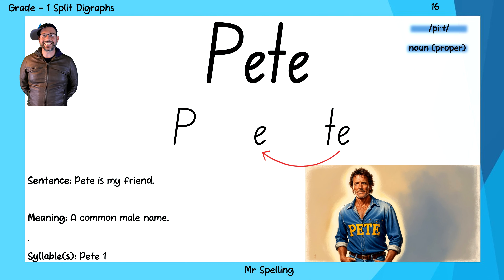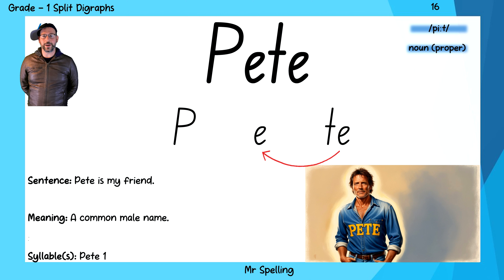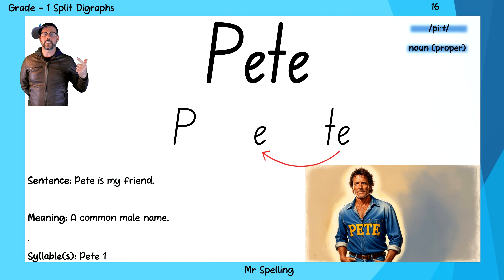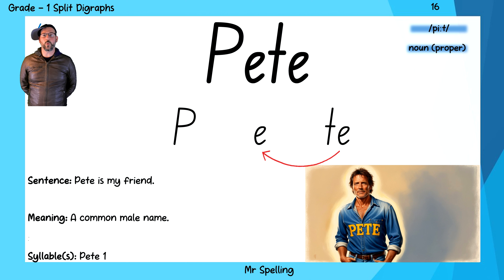Pete is the next word on our list. Pete is my friend. Pete. You might notice that this word has a capital because Pete is a proper noun — Pete is somebody's name. And the sounds of Pete are P, E, T — Pete. And the silent E at the end of the word changes the sound of the vowel.